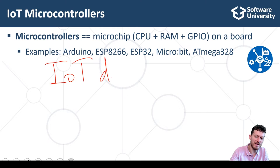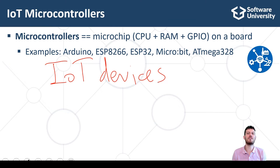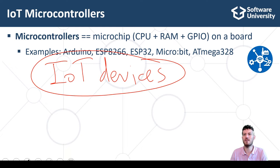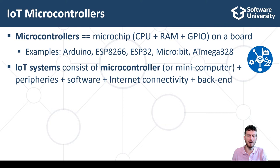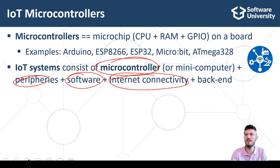Examples of IoT devices include ESP32-based microcontroller boards and Raspberry Pi mini computers. Digital gadgets like Amazon Echo with Alexa, security cameras, smart plugs, smart baby monitors, and robotic vacuum cleaners are also IoT devices. IoT systems consist of an IoT microcontroller or mini computer, peripherals, software, internet or network connectivity, and a backend system or IoT cloud.